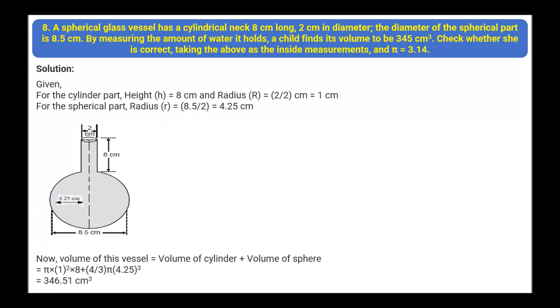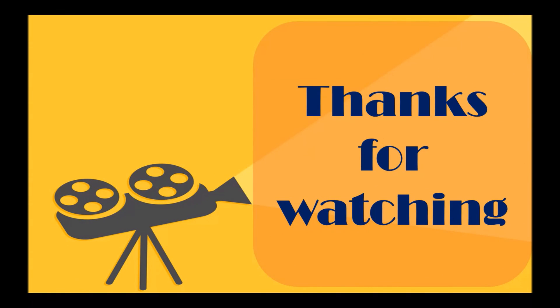Next: a spherical glass vessel has a cylindrical neck 8 cm long and 2 cm in diameter. The diameter of the spherical part is 8.5 cm. A child finds its volume to be 345 cm³. Check whether she is correct, taking the above as inside measurements and π = 3.14. For the cylinder: height = 8 cm, radius = 1 cm. For the sphere: radius = 4.25 cm. Volume of vessel = volume of cylinder + volume of sphere = 346.51 cm³. So the child's answer is not exactly correct.